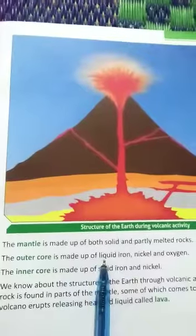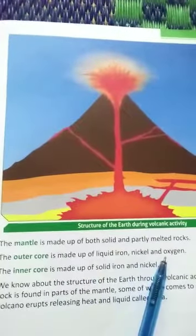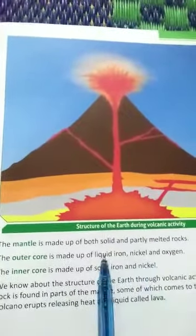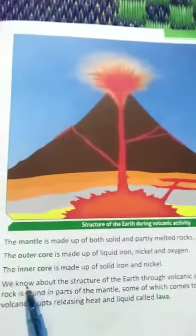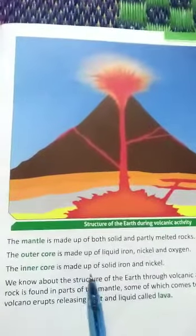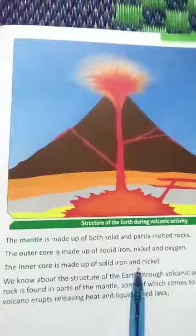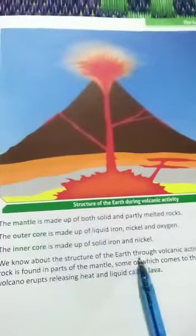Outer core — the outer core is made of liquid iron, nickel, and oxygen, so these three things make up the outer core. The inner core is made up of solid iron and nickel. We know about the structure of the Earth through volcanic activities.